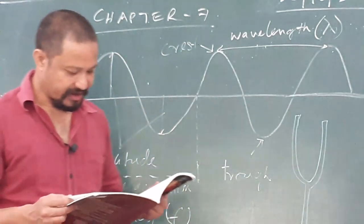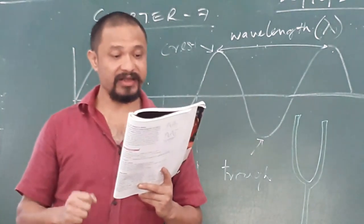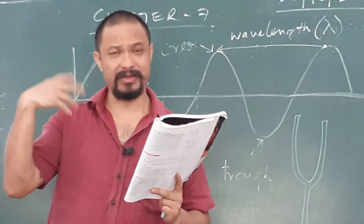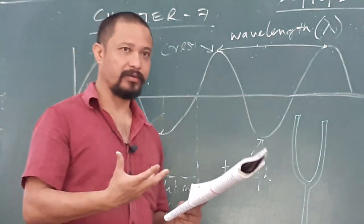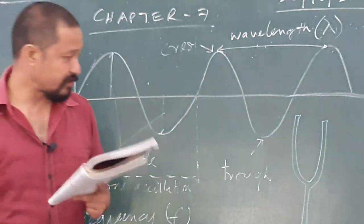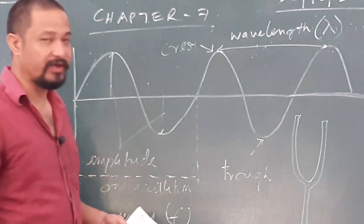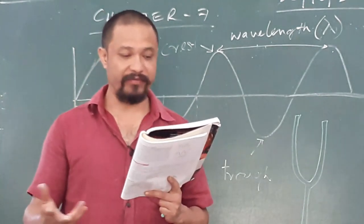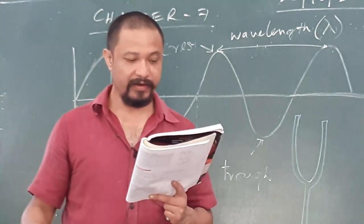Next is pitch of a sound. The characteristic of a sound that differentiates a shrill sound from a hoarse sound is called pitch. Shrill is a very high-pitch sound, which can be annoying to the ear — I'll call it treble. Hoarse sound I'll call bass. The pitch of the sound depends on its frequency. A wave with higher frequency has a high pitch — that means the number of vibrations are very high, so it will have a high pitch.